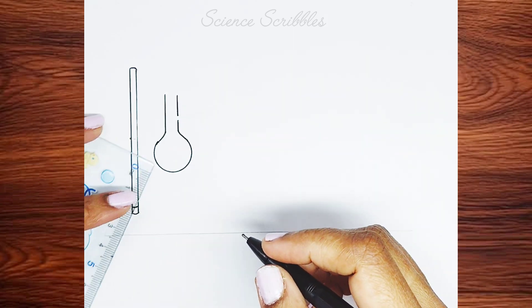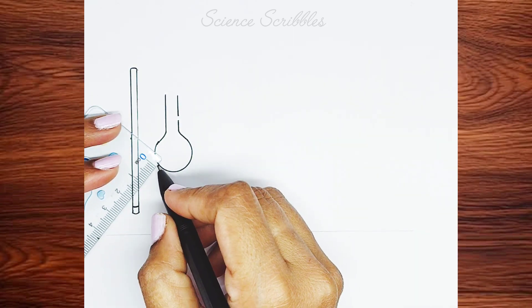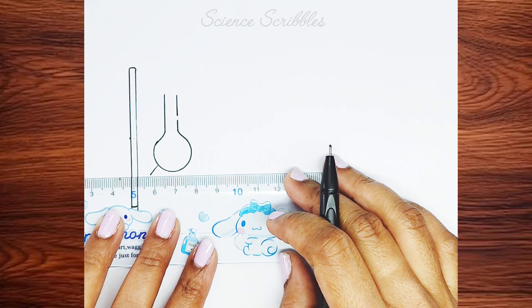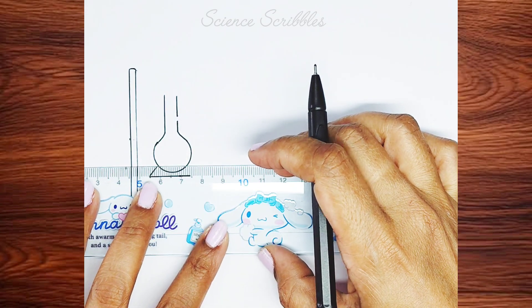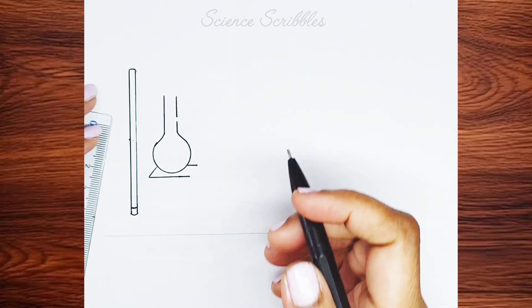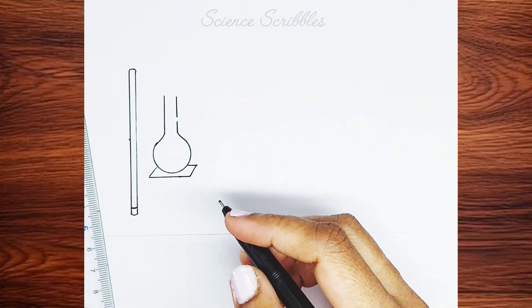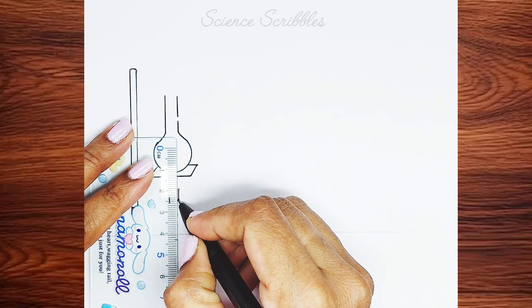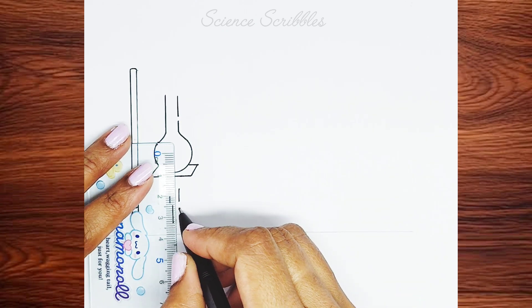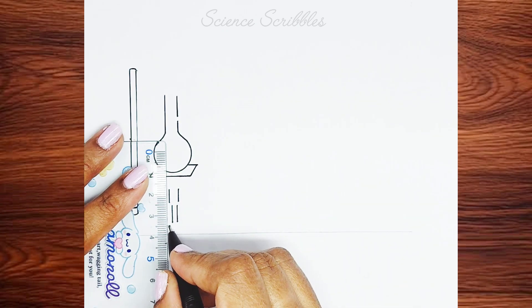Now, we'll draw the stand on which the distillation flask is placed. Beneath the stand, we'll add a Bunsen burner. If you want a detailed diagram of a Bunsen burner, I have posted one earlier, please check it out.